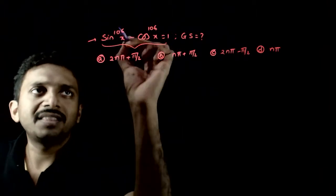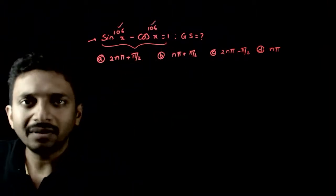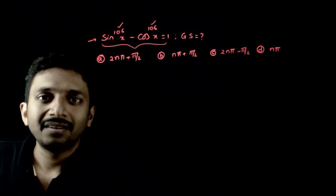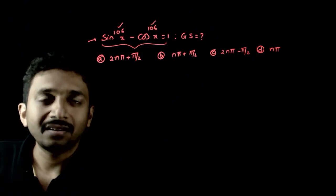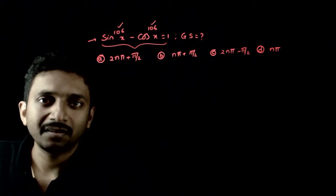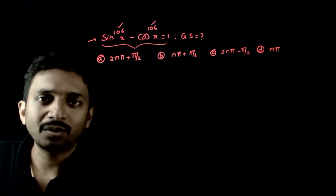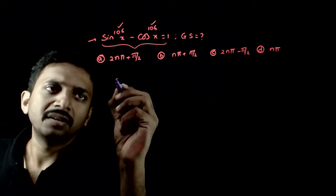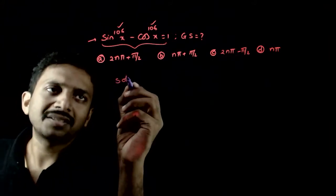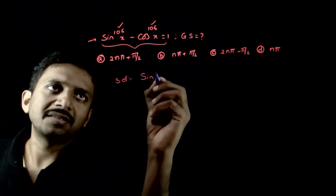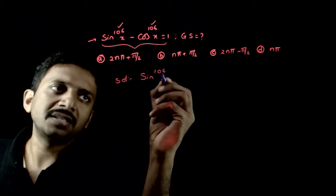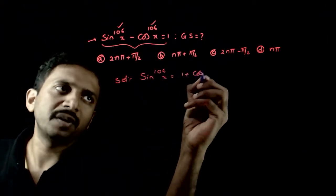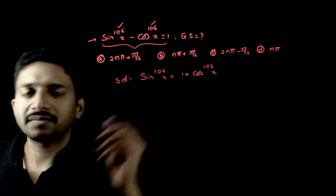Obviously, itna bada power hai toh you are not expected to solve it straightforwardly. So, use logic — this equation can be rewritten as sin power 106x is equal to 1 plus cos power 106x.